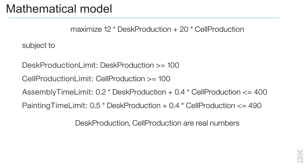This problem is a typical example of an LP model. Real-world models will typically involve many more variables and constraints, or even additional objectives.